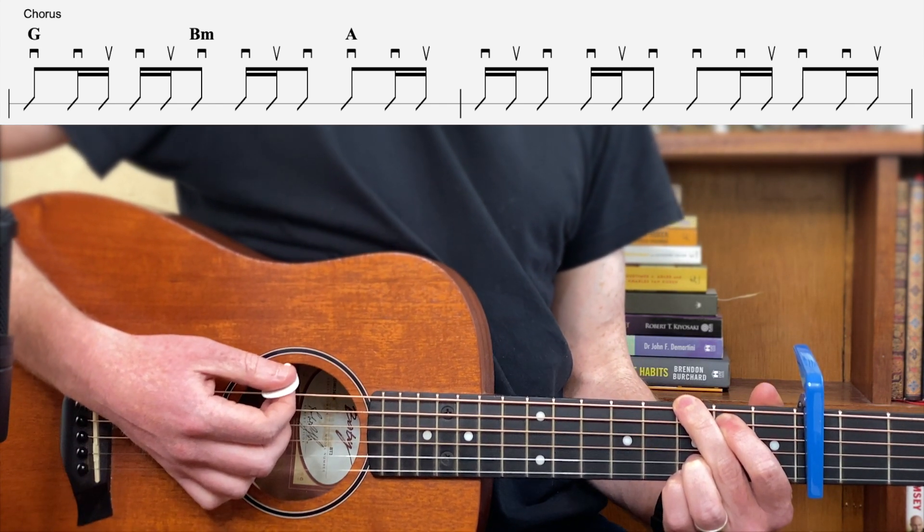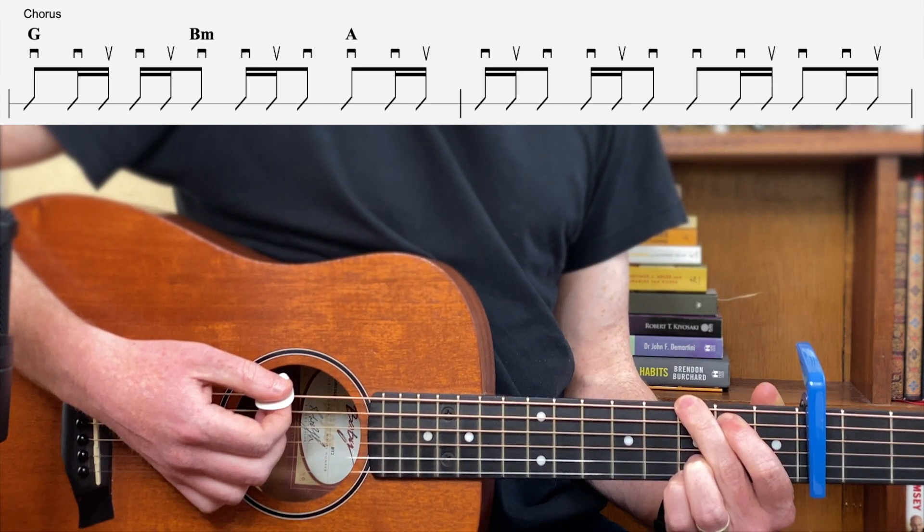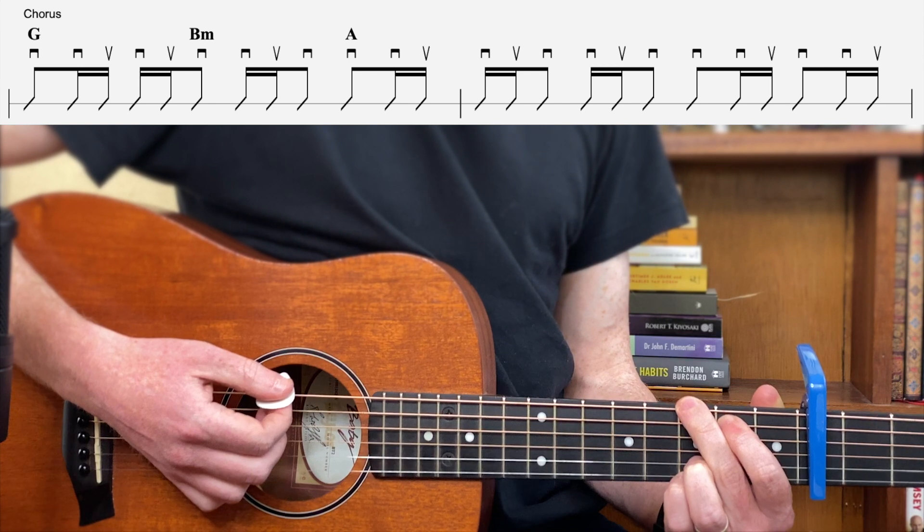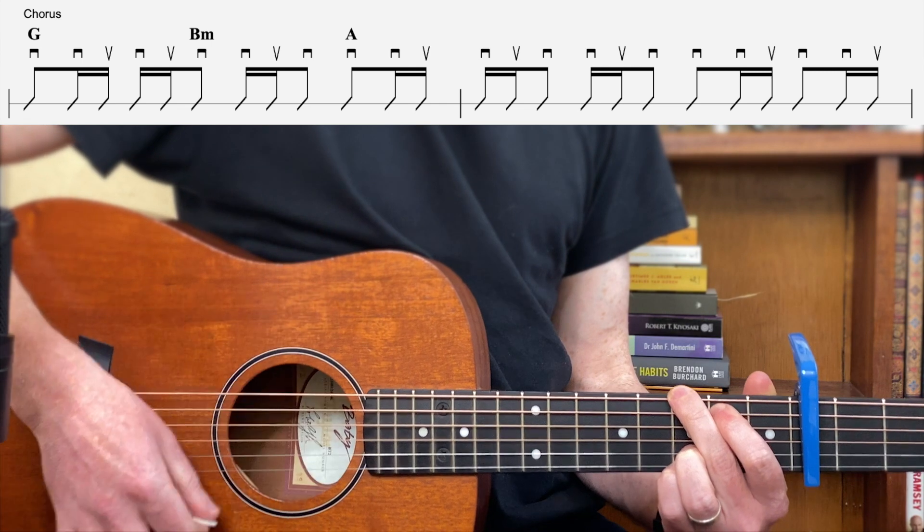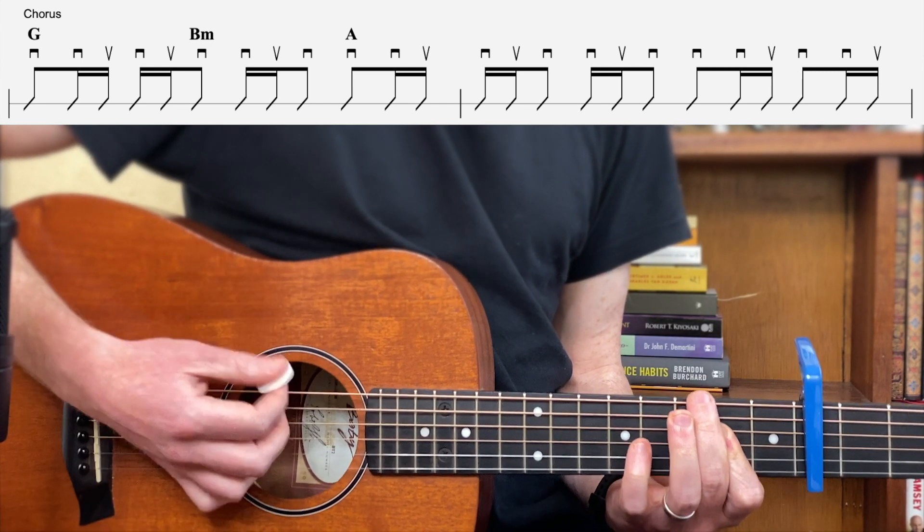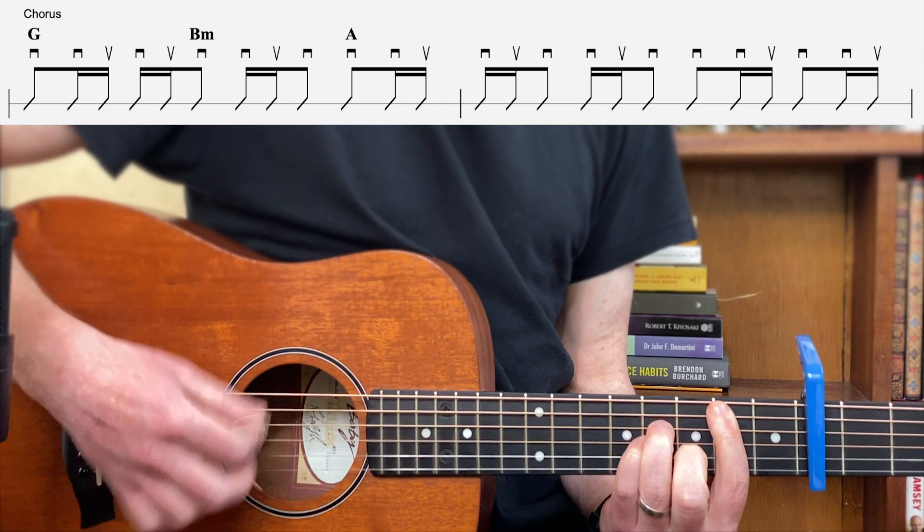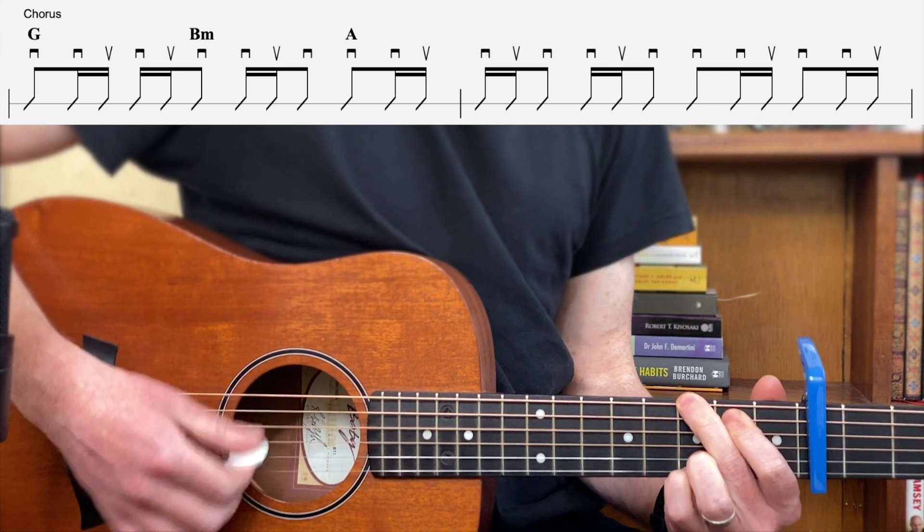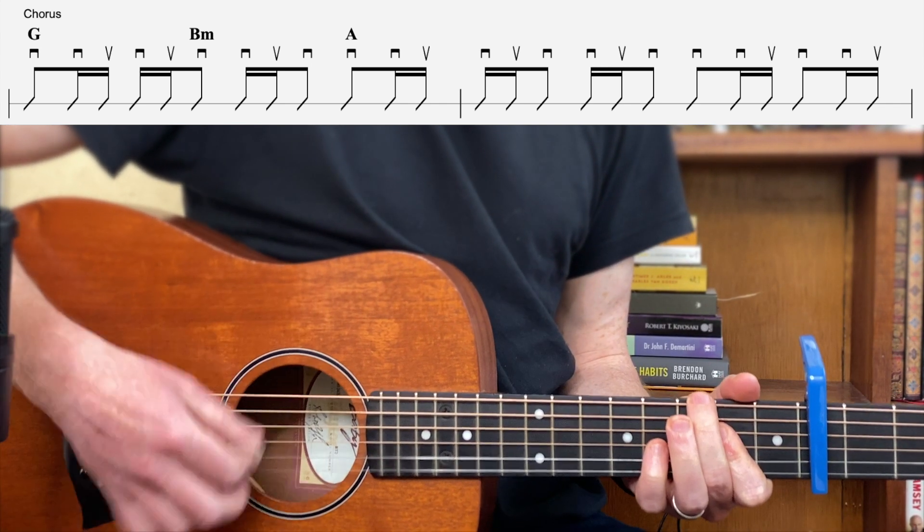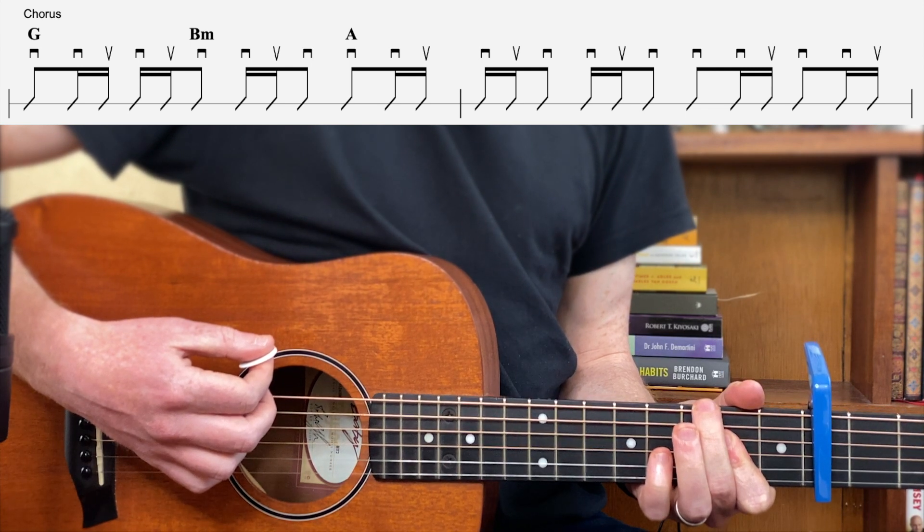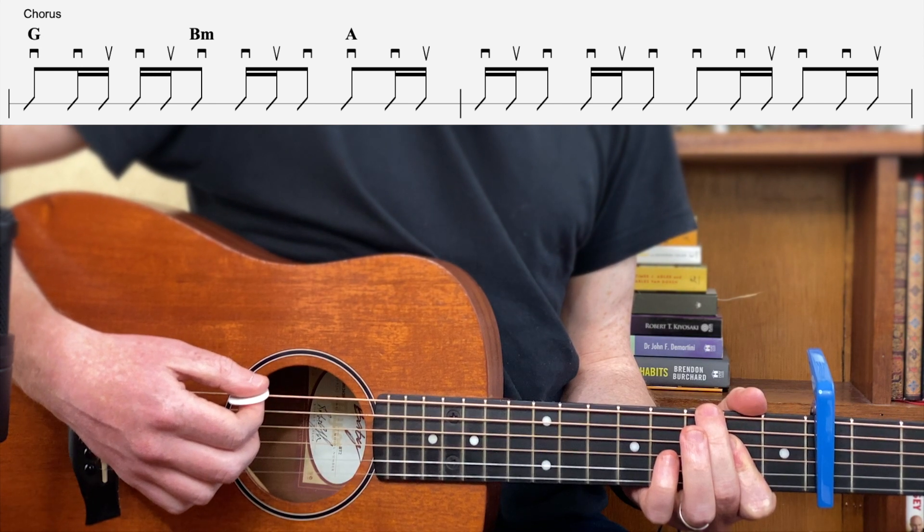And that's what we get when you practice it and speed it up. Now the next stage then would be to put in the chords, so look at where it changes to B minor and then A. Do that one more time. Sorry, do that one more time.